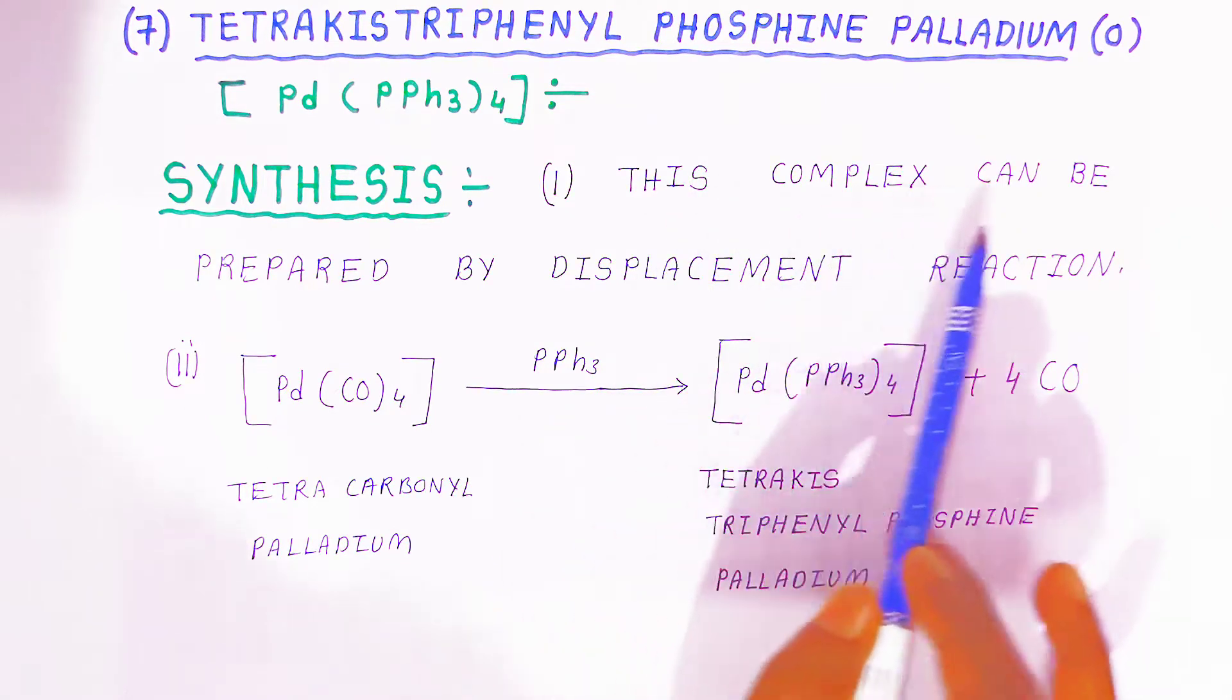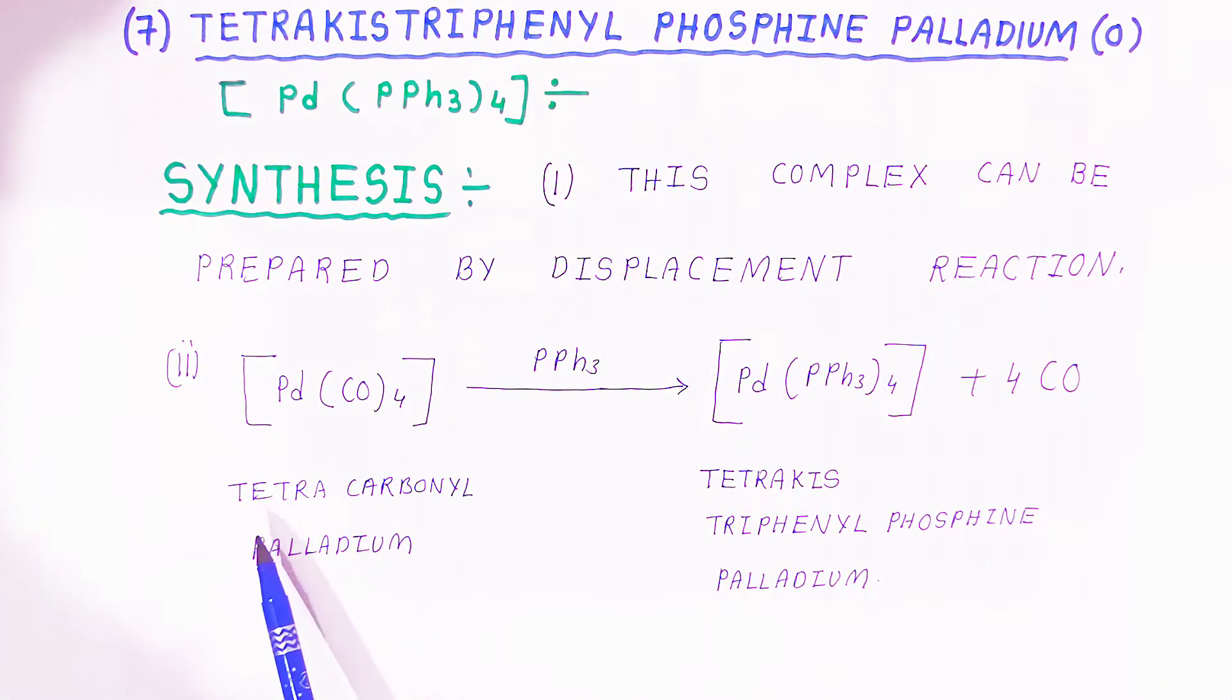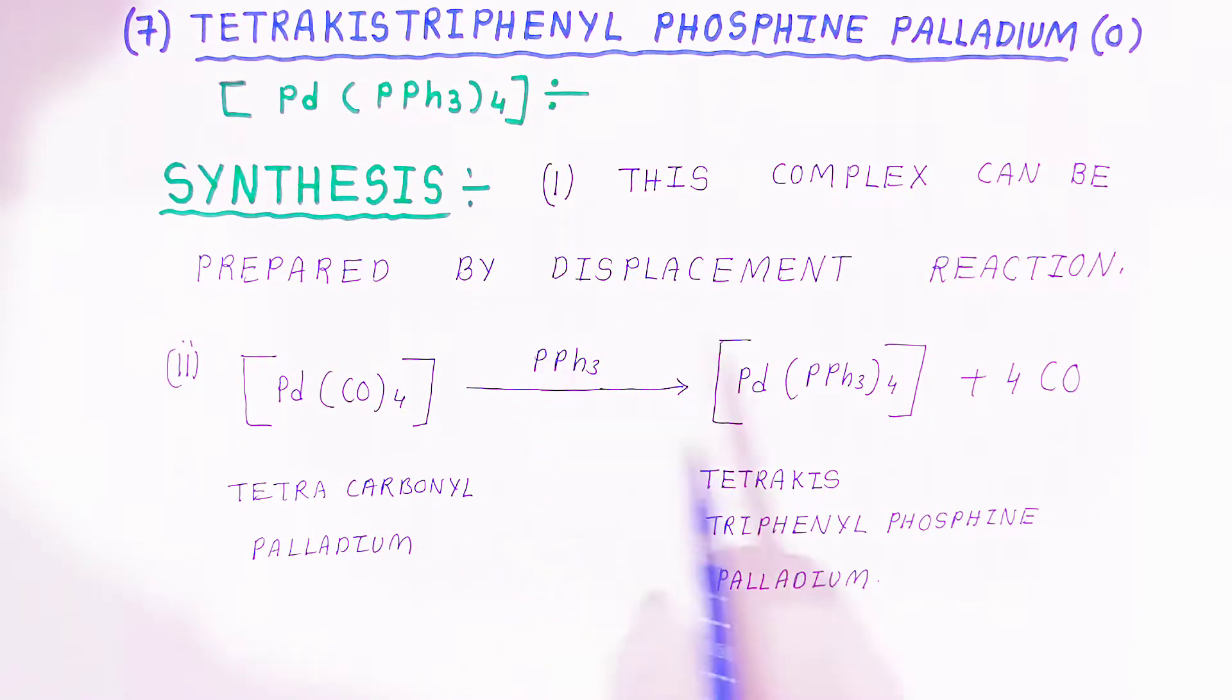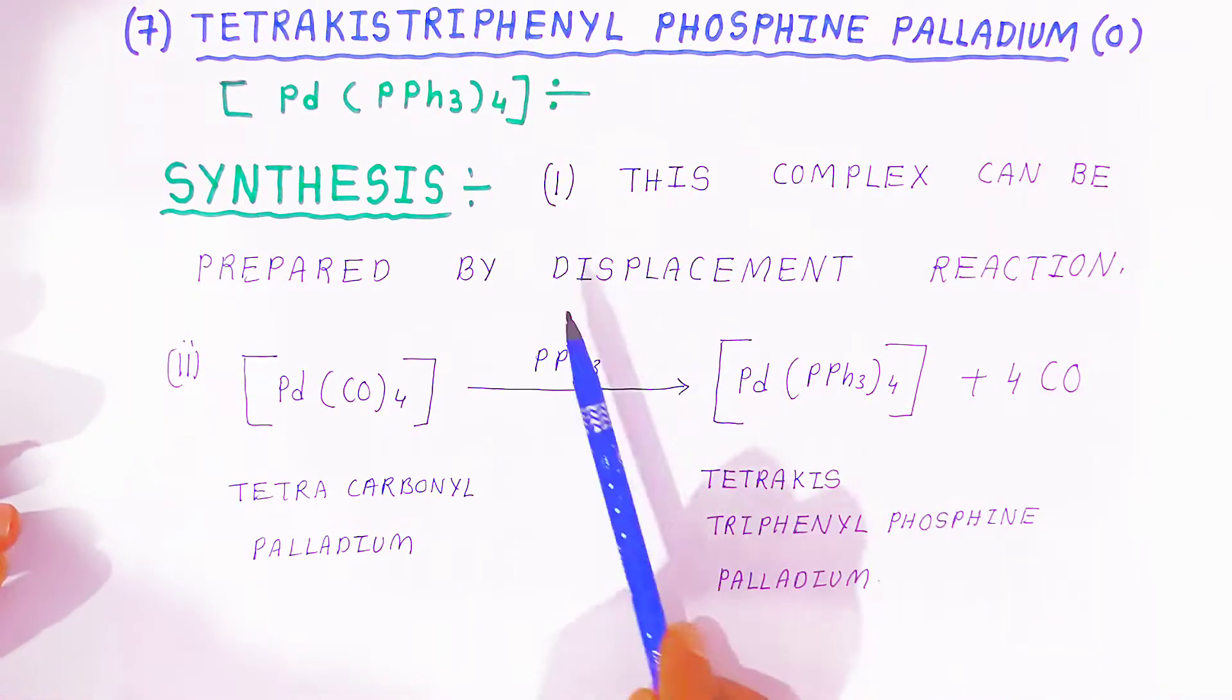The raw material is tetracarbonyl palladium. Tetracarbonyl palladium reacts with triphenylphosphine and it will give you tetrakis triphenylphosphine palladium and four molecules of CO. So this is how you can synthesize it in the lab by displacement reaction.